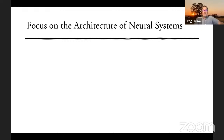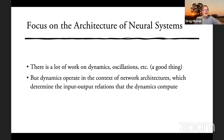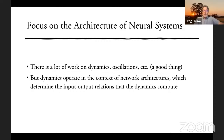There's a lot of work on dynamics, including neural work on oscillation patterns. Dynamics are real and important to understand. But dynamics operate in the context of neural architectures — that is, components of the system and their arrangement with other subsystems — and these determine the input-output relations that the dynamics end up computing. This is often expressed as box-and-arrow models, which these days is sometimes considered old-fashioned.